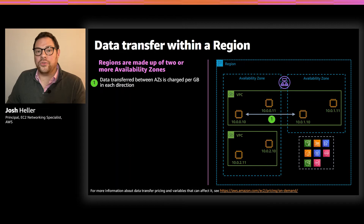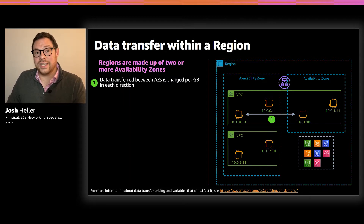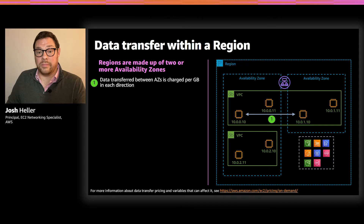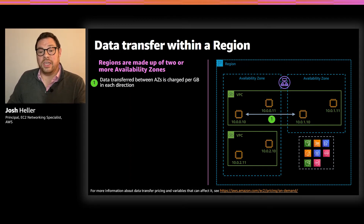Reducing your application communication across AZ boundaries is an important technique to reduce data transfer. Try to build your application so that communication is contained within a single availability zone, but then create multiple partitions of that application across AZs to provide the redundancy your application needs.